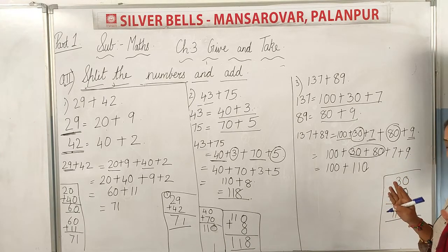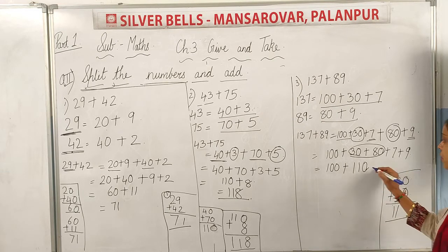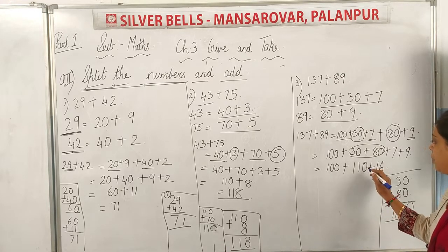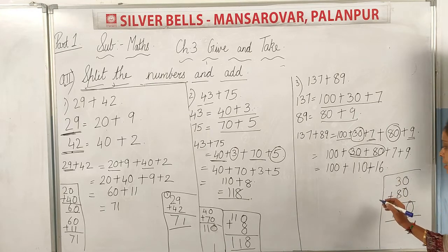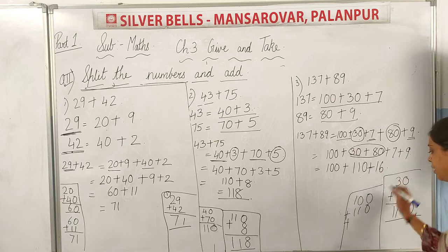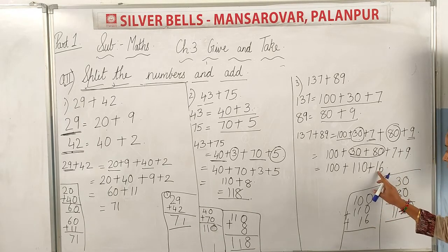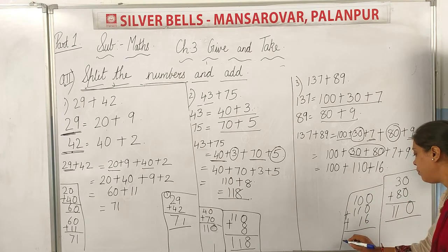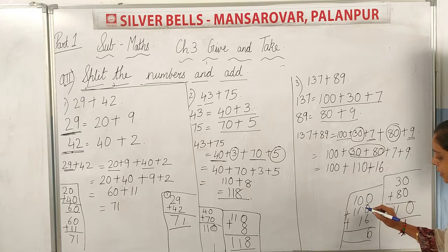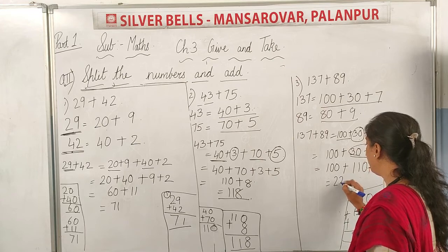Now 7 plus 9 — take 9 fingers and count up from 7: 8, 9, 10, 11, 12, 13, 14, 15, and 16. So 7 plus 9 is 16. Now we have 100, 110, and 16 to add together. Ones position: 0 plus 0 plus 6 is 6. Tens position: 0 plus 1 plus 1 is 2. Hundreds position: 1 plus 1 is 2. So the answer is 226.